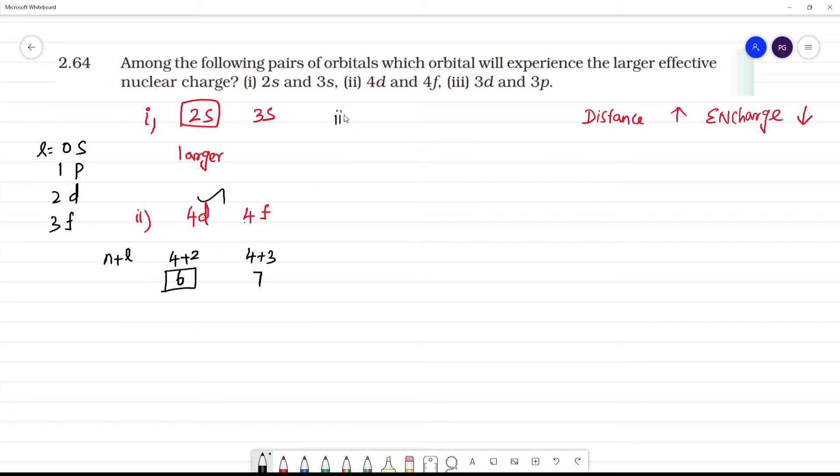Next, the third pair is 3d and 3p. Using the n plus l value: for 3d, 3 plus 2 equals 5, and for 3p, 3 plus 1 equals 4. Since 4 is lower, 3p will be nearer to the nucleus and will have the larger effective nuclear charge.